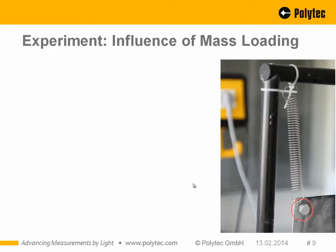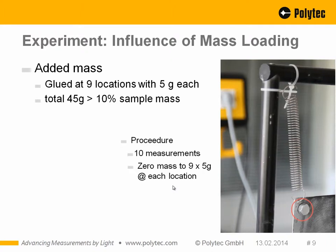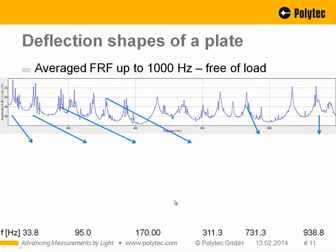To observe mass loading effects, we glued masses at nine locations — 4 grams each — totaling 45 grams, which is less than 5% of the sample mass. Not a very large added mass. The procedure used 10 different full-field measurements, starting from zero mass up to the maximum of 45 grams, adding one mass at a time. We started at the upper left corner and made an even distribution across the steel plate.